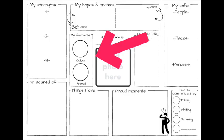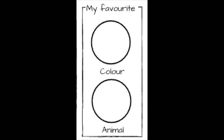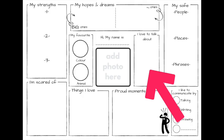Then we're going to have some basics like their favourite colour and animal. These are things you can use as a way into conversations with the child, but you can also use them to adapt resources — for example by using their favourite colour or animal to theme things that you might create for them.